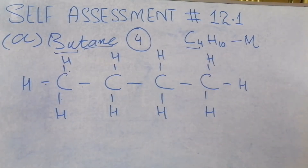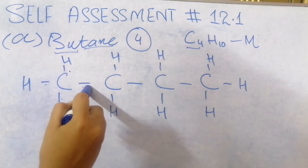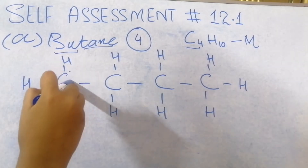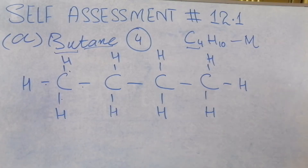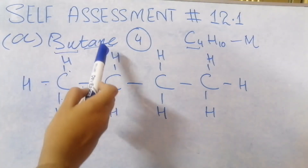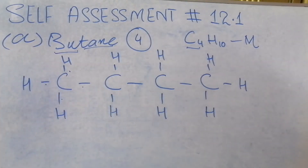Each carbon atom forms 4 bonds with hydrogen atoms. So here you have bond 1, bond 2, bond 3, and bond 4 — carbon makes 4 bonds. Keep this in mind. But if you have '-ene', then it is 2 bonds — a double bond. I will tell you about that later; for now we only have '-ane'.